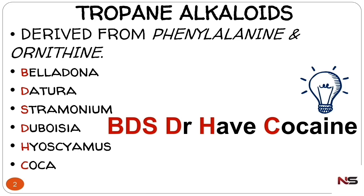Here we have 'BDS doctor have cocaine': B for belladonna, D for datura, S for stramonium, D for duboisia, H for hyoscyamus, C for coca. If you can remember these drugs without the trick that is better, but if you have difficulty you can use this mnemonic. We are moving to the next slide.